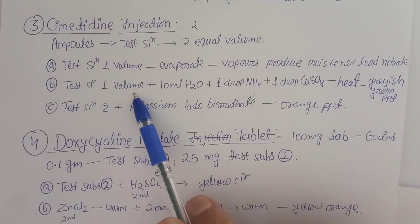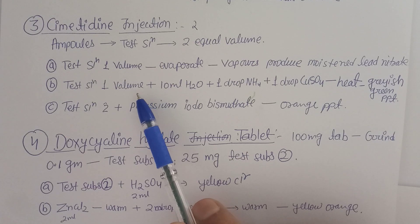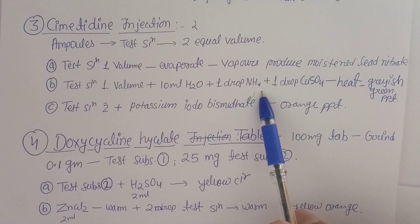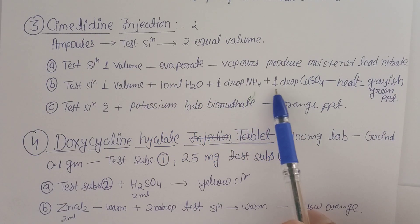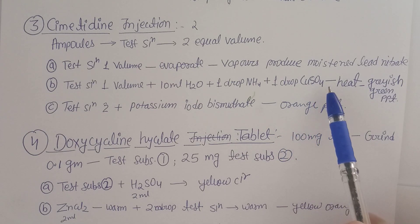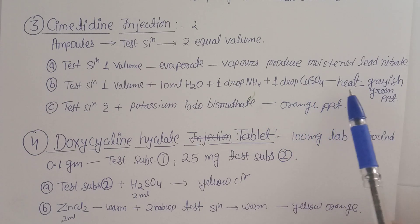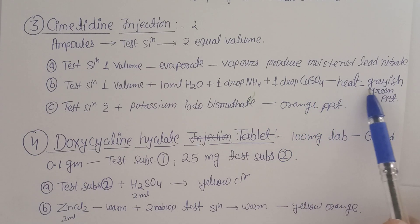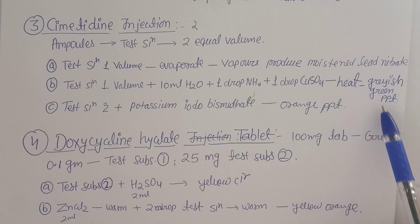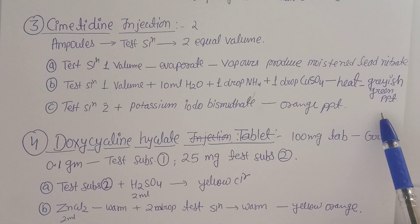Second test for cimetidine: to Test Solution 1, add 10 ml of water, one drop of ammonia, and one drop of copper sulphate, then heat. After heating, a grey-green precipitate is observed, confirming cimetidine in the injection.